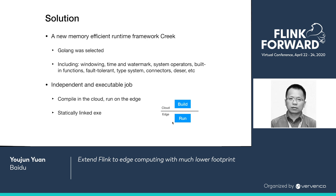Second, to minimize runtime dependency, we separate job generation from runtime and move it into the cloud. Job generation is heavy and has a bunch of dependencies. We make each job an independent executable — it is statically linked in the cloud and sent to each device via network. Hence, there is no runtime dependency.